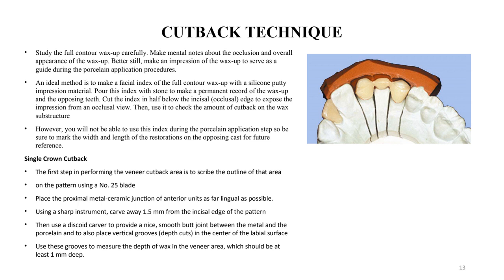We can use a facial index — after doing the full wax-up, take a lab putty index of the full wax-up, and then use it to guide how much to cut back. However, this putty matrix should only be used for the wax cutback, not as a guide when applying porcelain. Porcelain shrinks about 10 to 15% when baked, so if you use the matrix to shape the porcelain layout, after baking it will shrink and you'll need to add more porcelain.